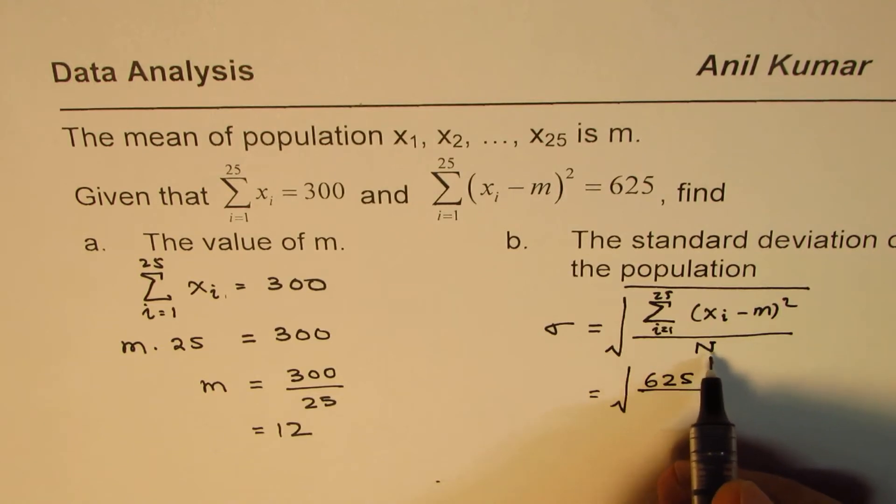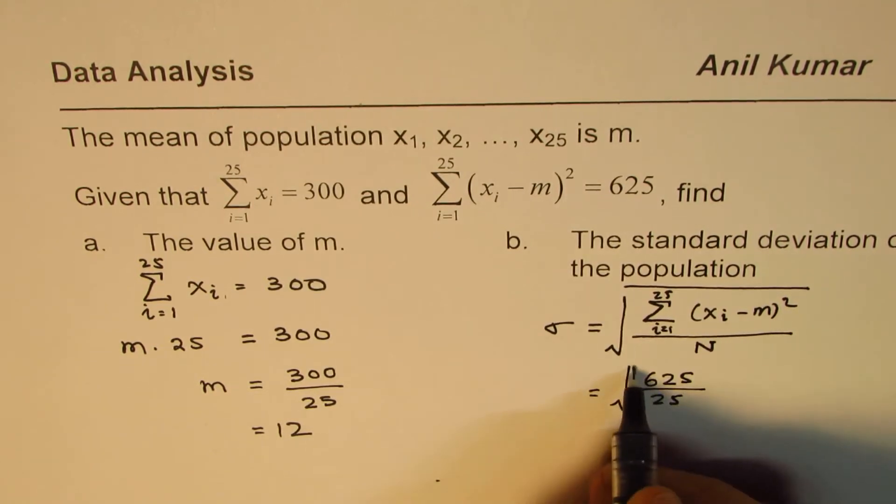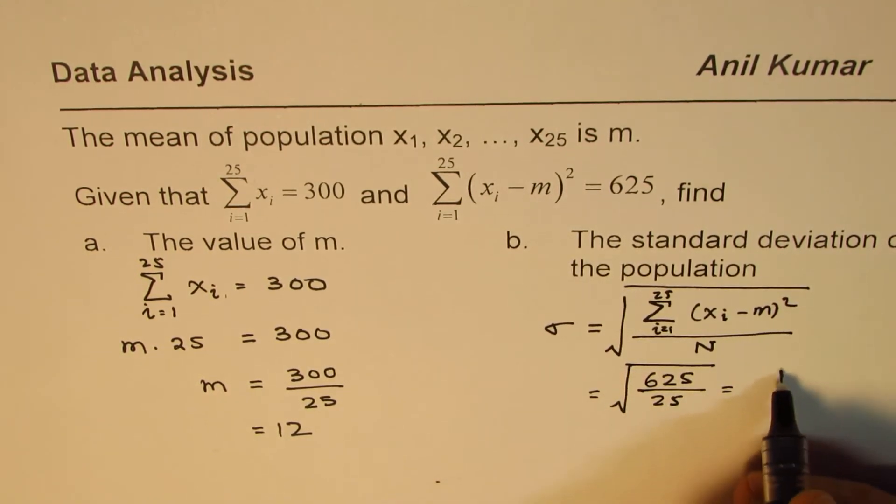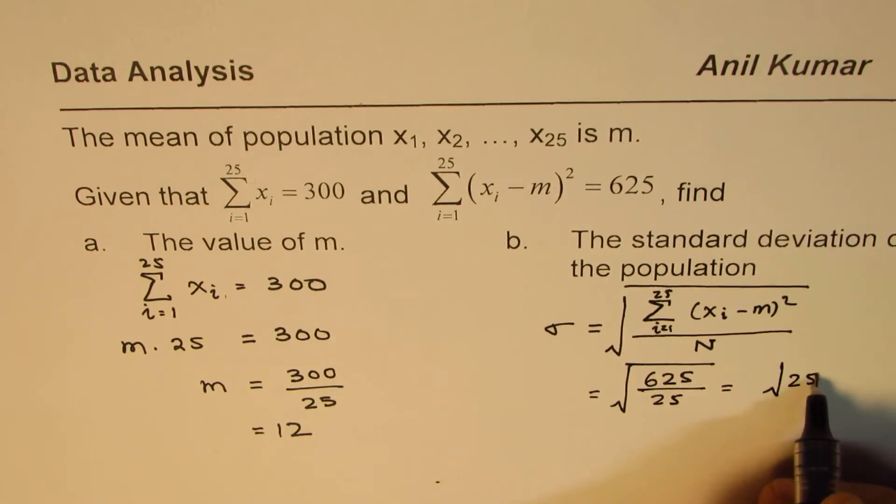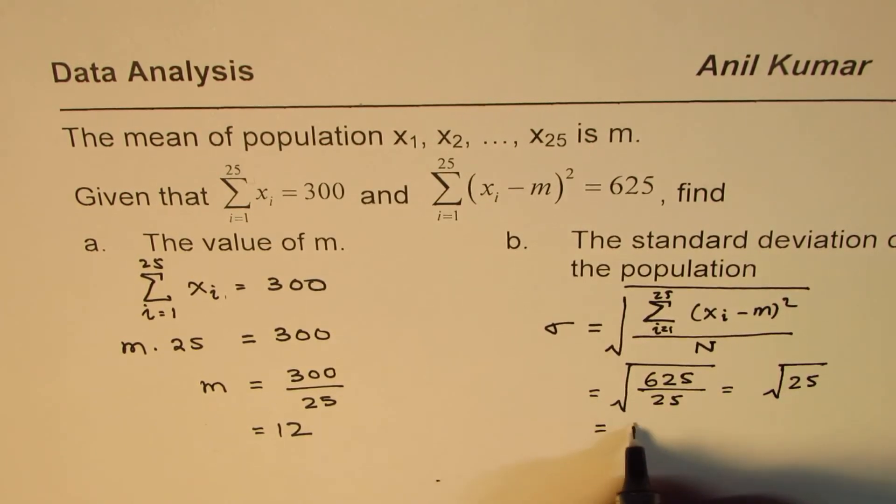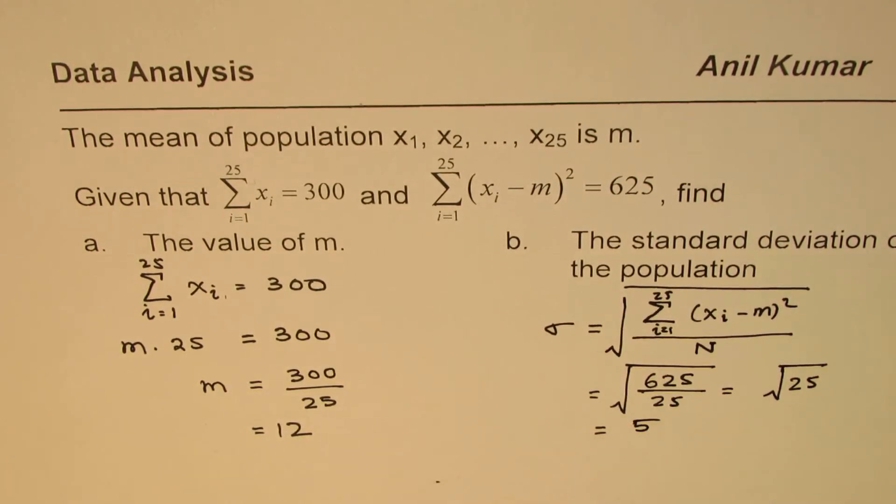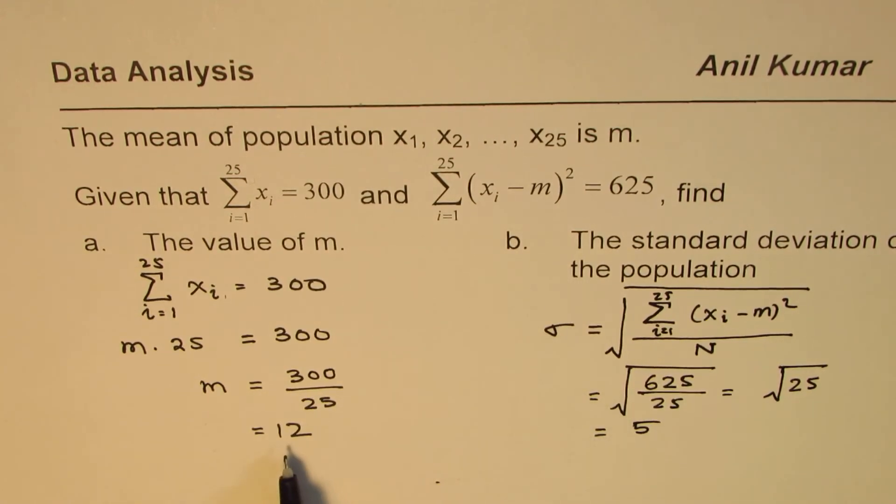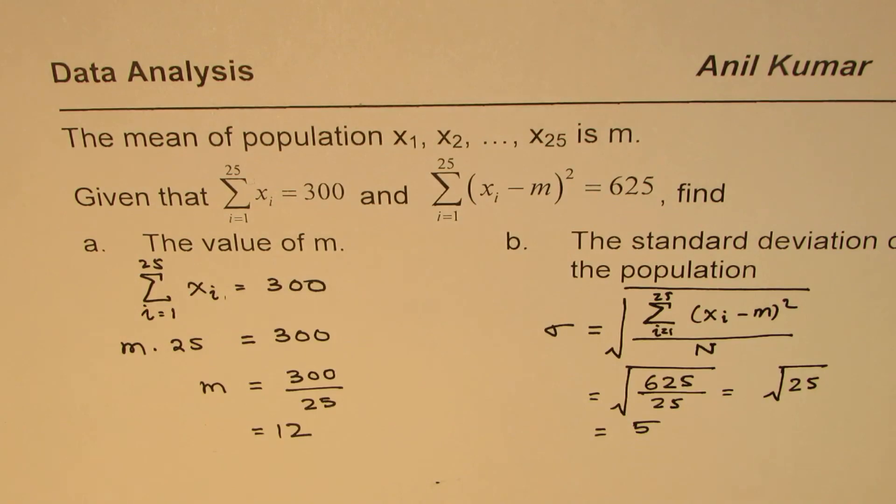So we are given 625 as the sum of the variance squared divided by 25. That equals square root of 25, and square root of 25 is 5. So in this particular case, the mean is 12 and standard deviation is 5. I'm Anil Kumar and I hope that helps. Thank you and all the best.